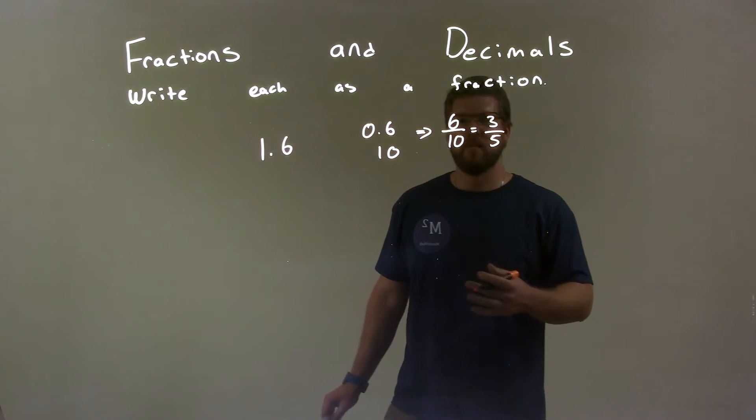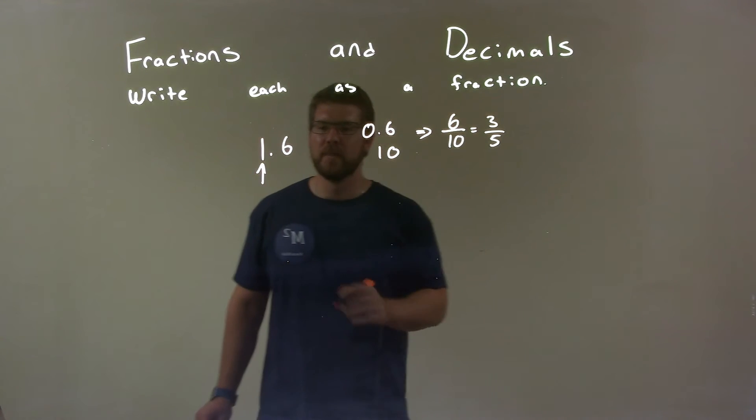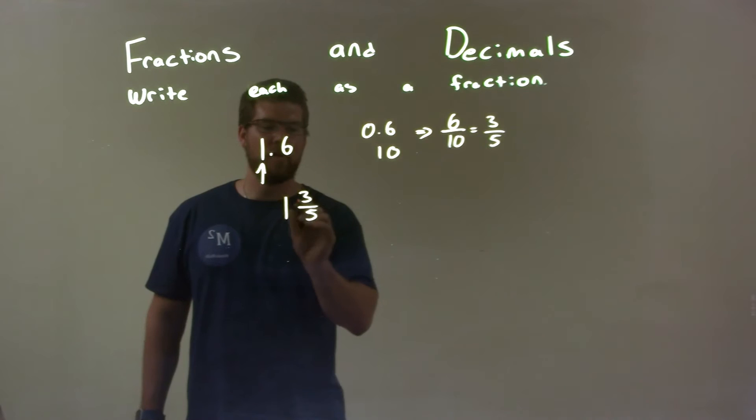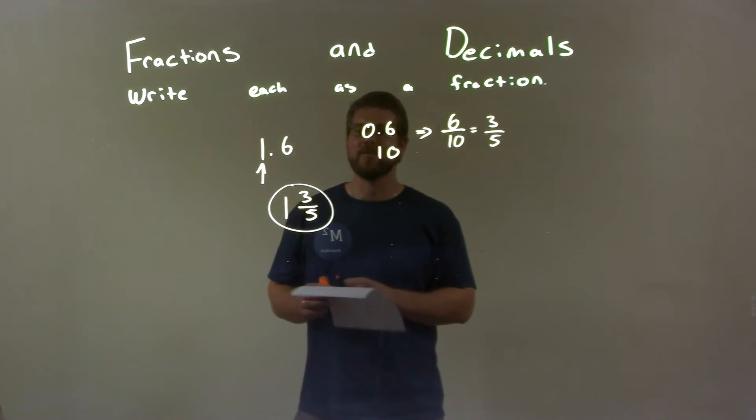Well, I can't simplify that anymore. So I combine the 3 fifths with the 1 that's out front, and we have 1 and 3 fifths. There we have our final fraction answer of 1 and 3 fifths.